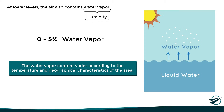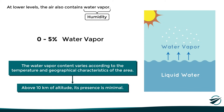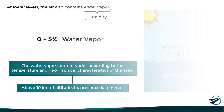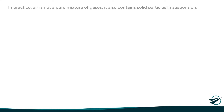Since humidity depends in part on the air temperature, as we go up in the atmosphere and the air temperature decreases, the humidity also decreases, so that above an altitude of 10 kilometers, the presence of water vapor is minimal. In practice, apart from water vapor, the air also contains tiny solid particles in suspension, known as aerosols.